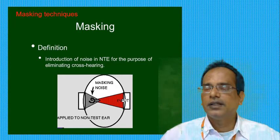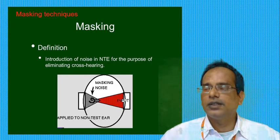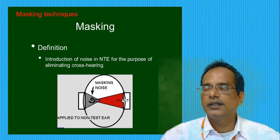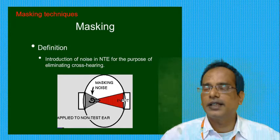Earphones that go into the ear, that is insert earphones, have a problem at about 60 dB. Thus if the ears are both normal, masking is not required. One should always mask air conduction if there is a 40 dB or greater threshold.